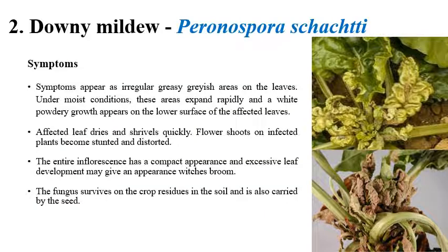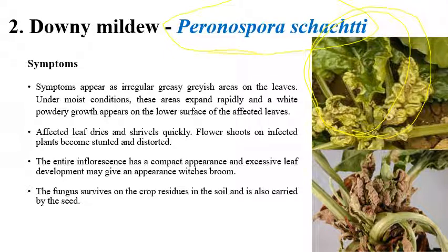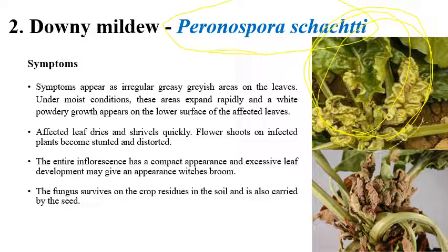The next disease is downy mildew, caused by Peronospora schachtii. Downy mildew in beetroot is completely different from other downy mildews, where white-colored downy growth is typically seen. Here, shriveling or shrinking of leaves can be seen. Initially small gray spots appear, but in later stages, complete shrinking and shriveling of leaves occurs. On the lower surface, white colored powdery growth can be observed.